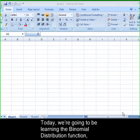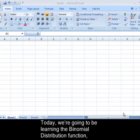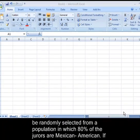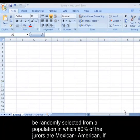Today we're going to be learning to use the binomial distribution function BINOMDIST on Excel. We are looking at a jury selection problem. Twelve jurors are to be randomly selected from a population in which 80% of the jurors are Mexican-American.